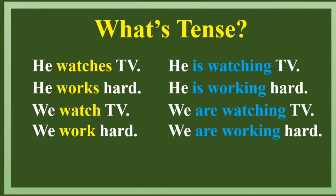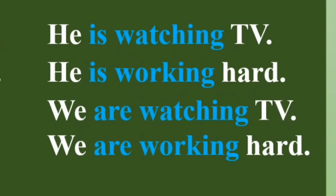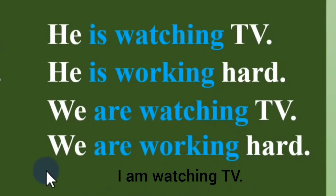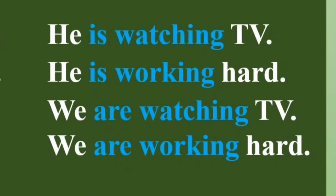How about present continuous? If you see in paragraphs, books, newspapers, anywhere — if you see the to-be verb 'is,' 'are,' or 'am' with verb -ing, or the present participle form of the main verb — this is 100% present continuous. For example: 'he is watching TV,' 'he is working hard,' 'we are watching TV,' 'we are working hard,' 'I'm watching TV,' 'I'm working hard' — all present continuous. So is, are, and am with verb -ing means present continuous.